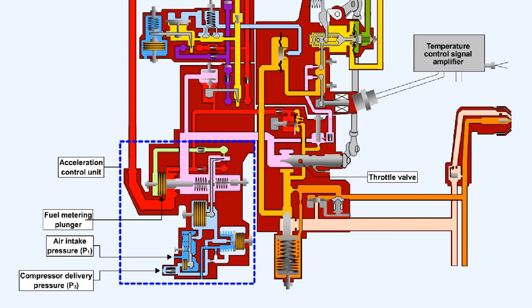The acceleration control unit receives information regarding engine intake pressure P1 and compressor delivery pressure P3 for a two-spool engine, and uses this information to adjust a fuel metering plunger. The fuel metering plunger effectively acts as a second throttle valve in series with the main throttle, and it regulates the fuel flow to achieve the fastest engine acceleration without causing stall or surge.